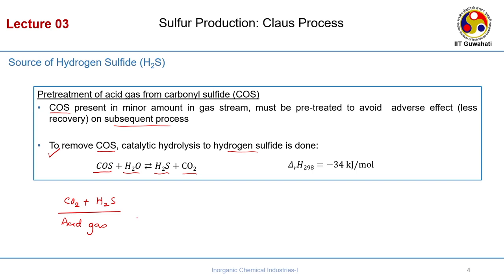Sometimes this is called sour gas. The primary difference between acid gas and sour gas is that sour gas usually reflects the composition of H2S explicitly, while acid gas comes together as carbon dioxide plus H2S. From now on we will use the terms acid gas and sour gas interchangeably.